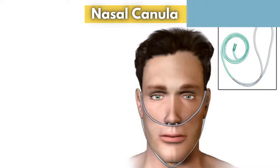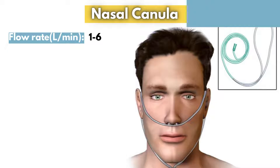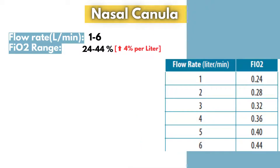The conventional nasal cannula is one of the simplest and most commonly used devices for delivering supplemental oxygen. It consists of two small prongs that sit inside the nostrils, providing oxygen directly to the patient. The flow rate typically ranges from 1 to 6 liters per minute. The fraction of inspired oxygen increases by approximately 3 to 4 percent per liter per minute, starting at around 24 percent at 1 liter per minute and reaching up to 44 percent at 6 liters per minute.